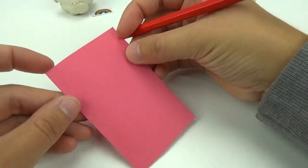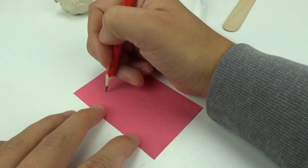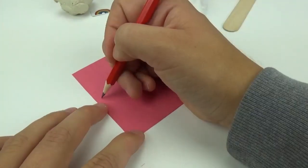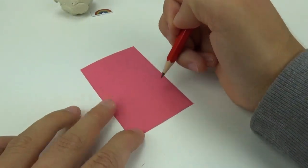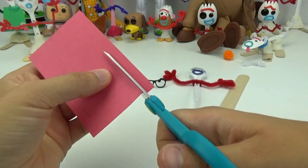With the piece of red construction paper, I am going to trace out a pair of overalls. Now, I will cut them out.